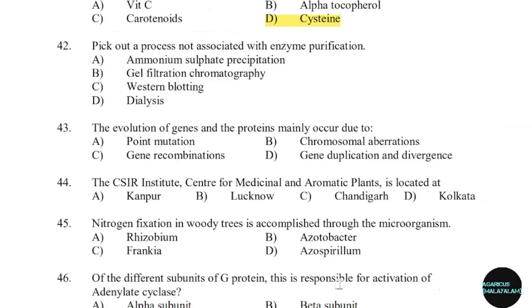42nd question: Pick out a process not associated with enzyme purification. Correct answer: Option C — Western blotting.